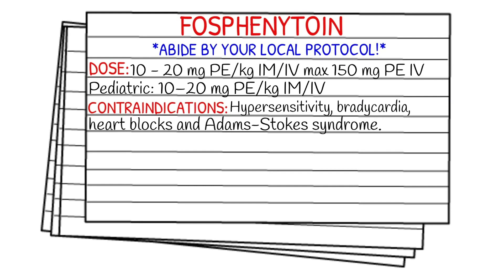Your dose could be 10 to 20 milligrams PE — PE stands for phenytoin equivalent — per kilogram, and it can be given IM or IV with a max of 150 milligrams IV. Your pediatric dose is also 10 to 20 milligrams PE per kilogram, IM or IV.